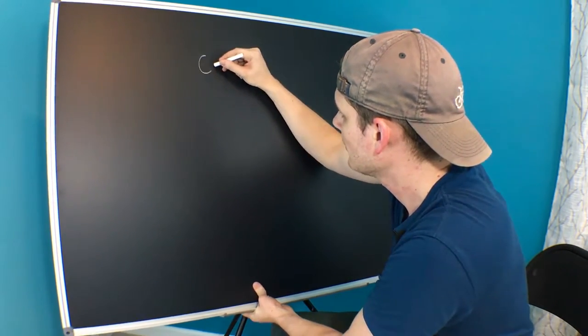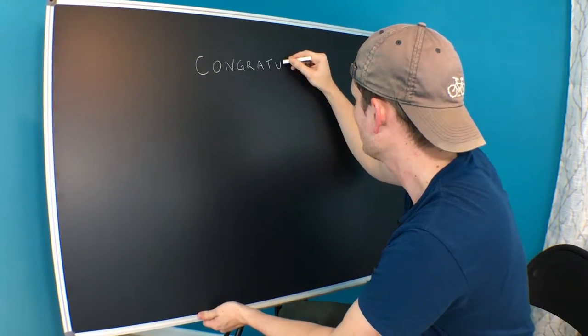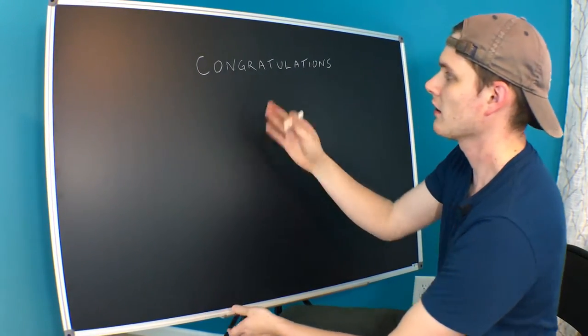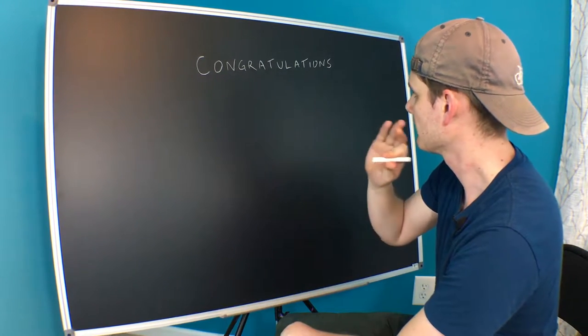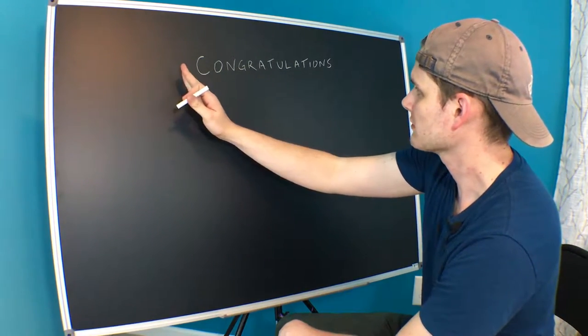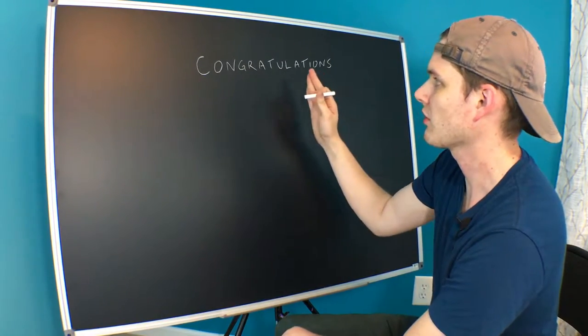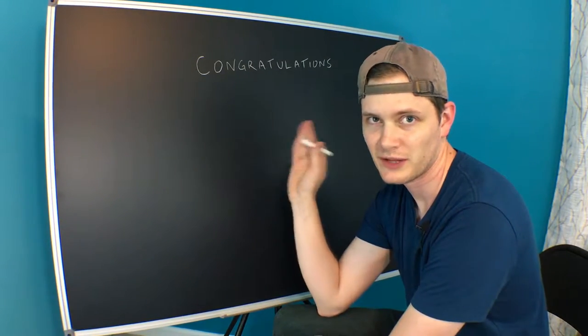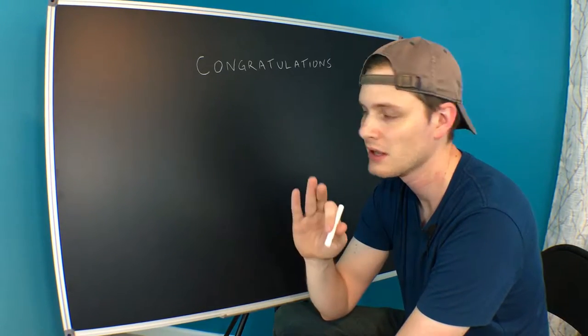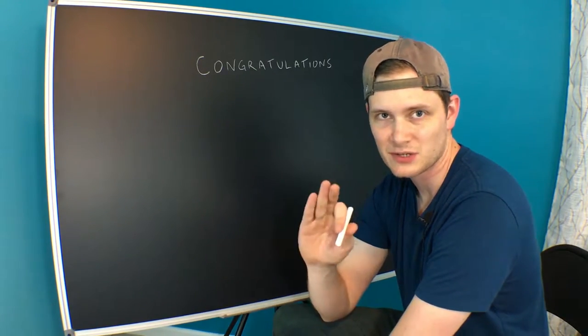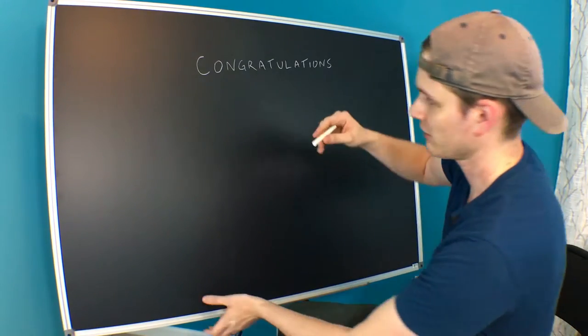So there's the word congratulations. What you want to do is figure out how many letters there are and find the middle letters of the word. Sometimes there's one, sometimes there's two middle letters, but you'll find that and that's actually going to be your starting point. So let's count the letters on this one.